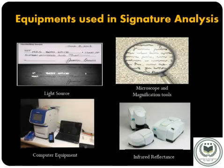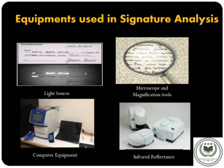Now we talk about the equipment used in signature analysis. Several equipment types are used, including light sources, microscopes and magnification tools, computer equipment, and infrared reflectance. Additional equipment includes AM scope, stereo scope with a digital camera attached with 5–30x magnification, MIScope IR UV microscope with 40–140x magnification, and various types of light boxes.